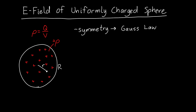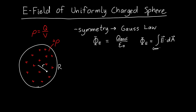Gauss's Law says that the electric flux phi_E is equal to the enclosed charge divided by the permittivity. The permittivity inside and outside the sphere is epsilon naught. The electric flux phi_E is just the integral of the electric field pointing out of some Gaussian surface, integrated over the surface area.